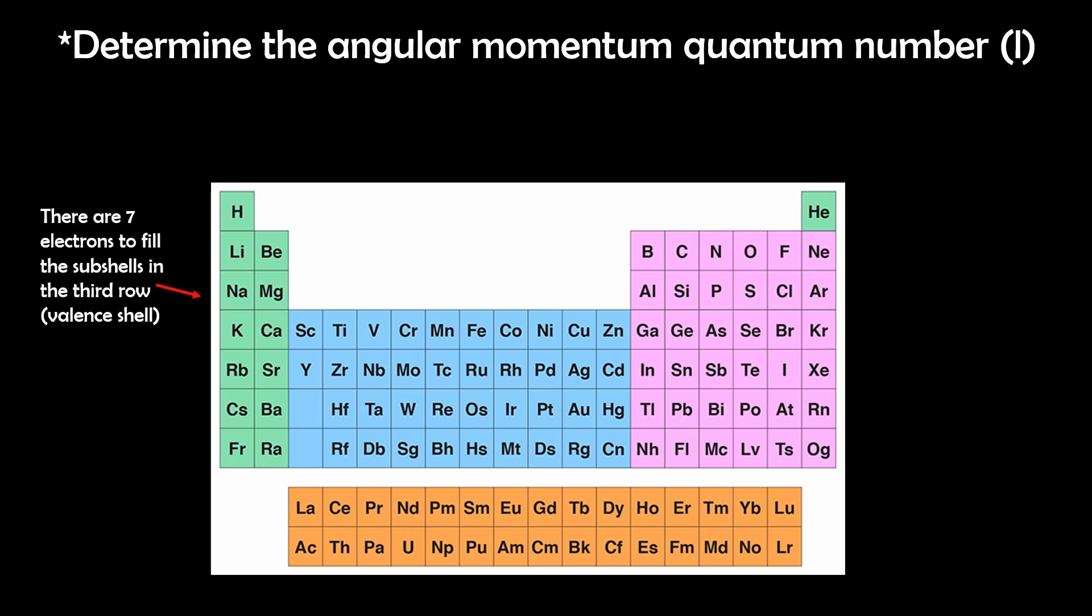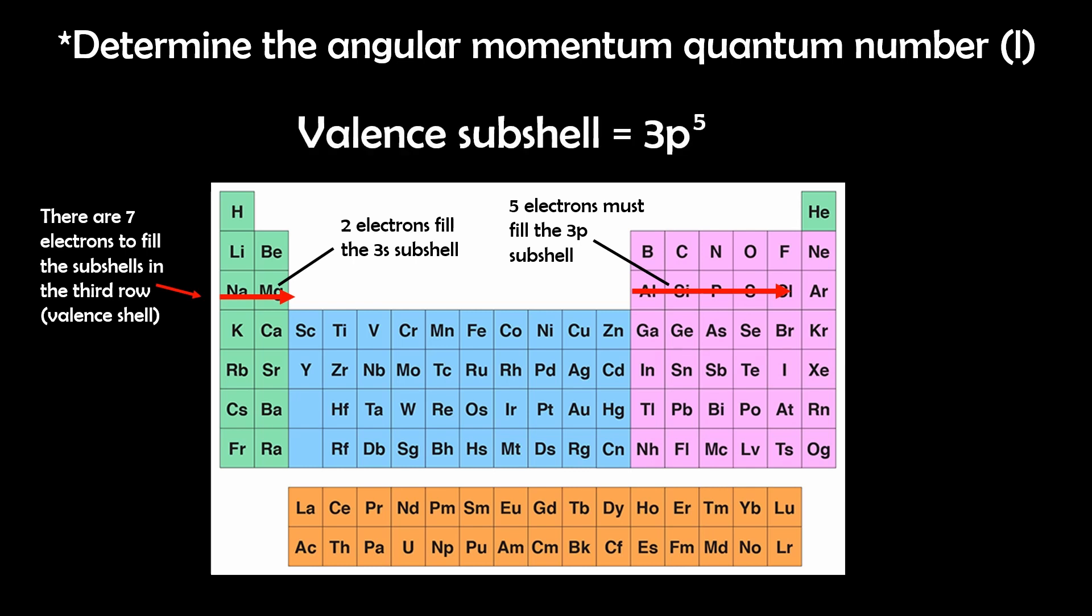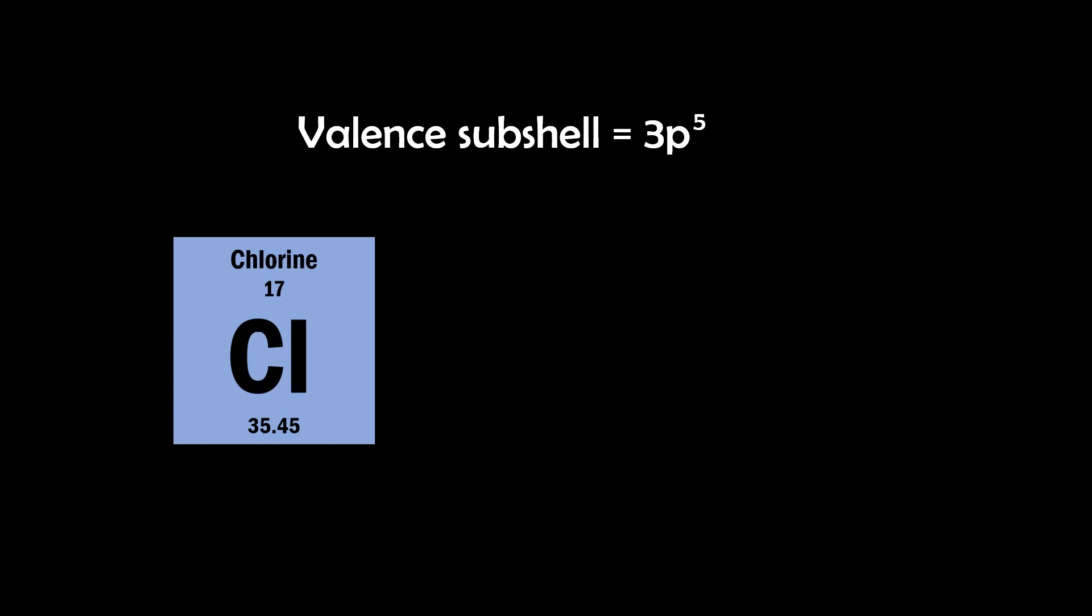These electrons fill the 3s subshell with 2 electrons and the 3p subshell with 5. So the valence subshell is 3p5, therefore the electron configuration for chlorine is 1s2, 2s2, 2p6, 3s2, 3p5.